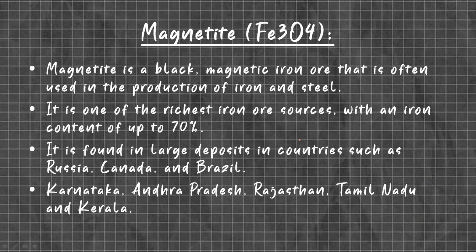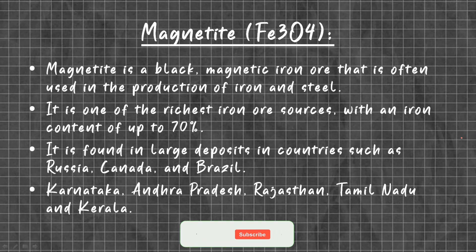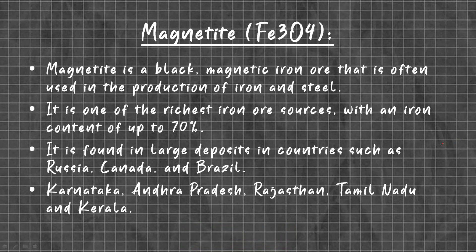Coming to magnetite. The chemical formula is Fe3O4. Magnetite is a black magnetic iron ore that is often used in the production of iron and steel. It is one of the richest iron ores with an iron content of up to 70%. It is mined in large deposits in countries such as Russia, Canada, and Brazil.